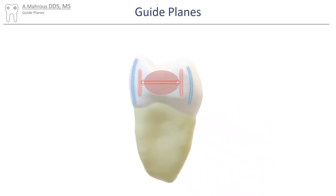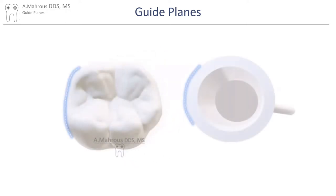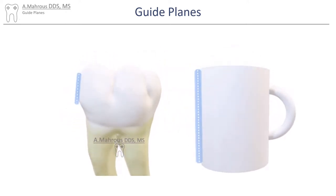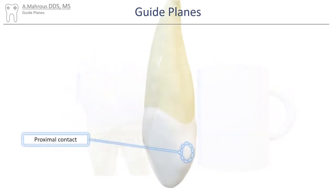The extension of the guide plane laterally should not extend to the proximal line angles. From an occlusal view, the contour or curvature of the tooth is maintained, but when looking at it from the side it is straight up and down.